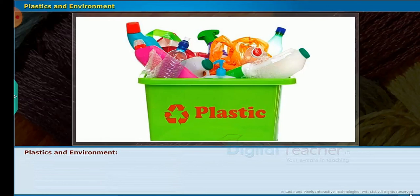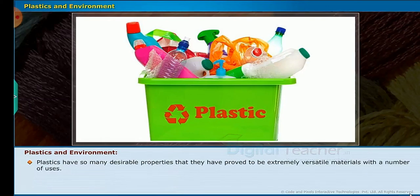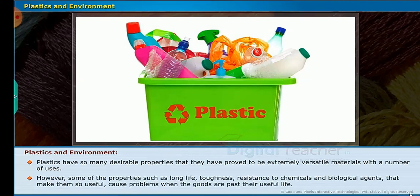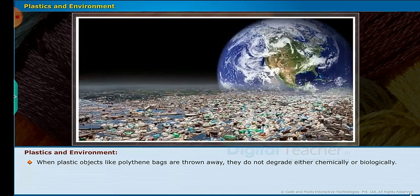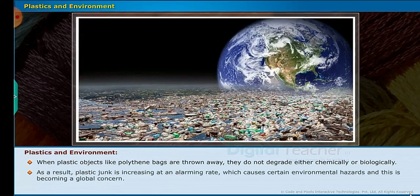Plastics and environment: plastics have so many desirable properties that they have proved to be extremely versatile materials with a number of uses. However, some of the properties such as long life, toughness, and resistance to chemicals and biological agents that make them so useful cause problems when goods are past their useful life. When plastic objects like polythene bags are thrown away, they do not degrade either chemically or biologically. As a result, plastic junk is increasing at an alarming rate, which causes certain environmental hazards and is becoming a global concern.